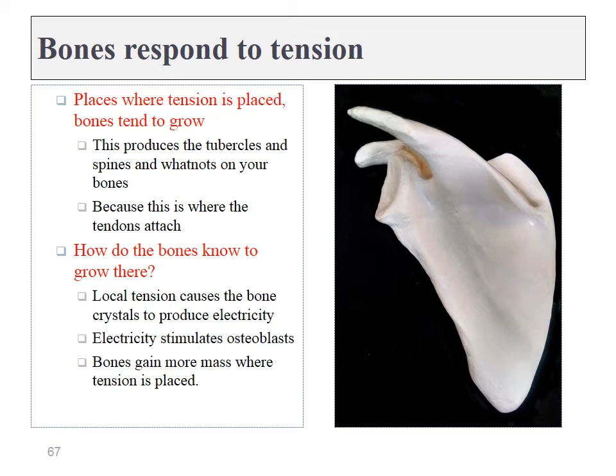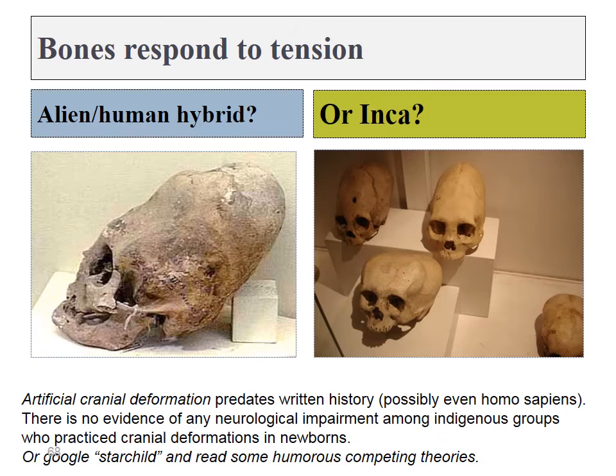Wherever stress is placed on a bone, it leads to bone growth. This leads to the formation of spines, tubercles, and other bumps on the skeletal system that anatomists have given names. So where a muscle attaches to a bone, the bone was just flat, but when the muscle puts tension on that spot, that area begins to grow thicker and eventually becomes a bump that somebody ultimately gave a name.